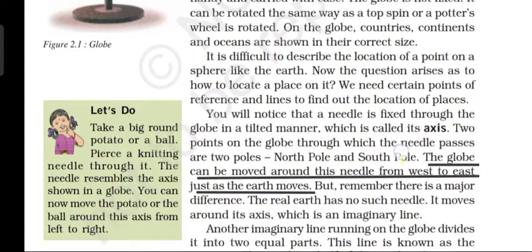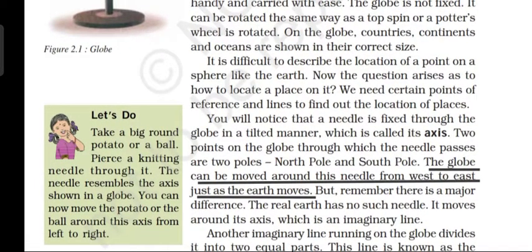You will notice that a needle is fixed through the globe in a tilted manner, which is called its axis. The two points on the globe through which the needle passes are the two poles — the north pole and the south pole. The globe can be moved around this needle from west to east, just as the earth moves. But remember: the real earth has no such needle. It moves around its axis, which is an imaginary line.